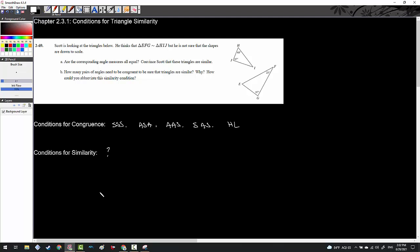It says that Scott is looking at the triangles below. He thinks that triangle EFG and HIJ are similar, but he is not sure that the shapes are drawn to scale. A couple of things. One, we are skipping 2-68, which is having you guys deal with pasta. Obviously I'm not going to do that in this video because I don't have pasta that you guys can see.